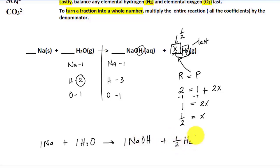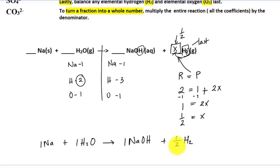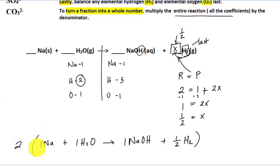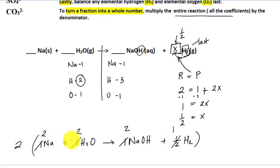So we have: 1 Na + 1 H₂O → 1 NaOH + 1/2 H₂. This is still the right answer using the fraction, but in college your professor wants whole numbers. To get rid of the fraction, multiply all coefficients by the denominator 2, giving us: 2 Na + 2 H₂O → 2 NaOH + 1 H₂.